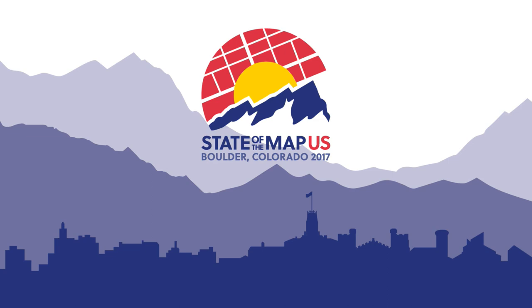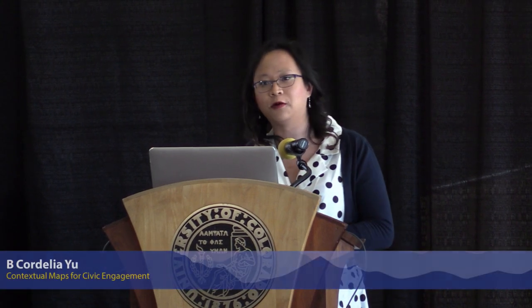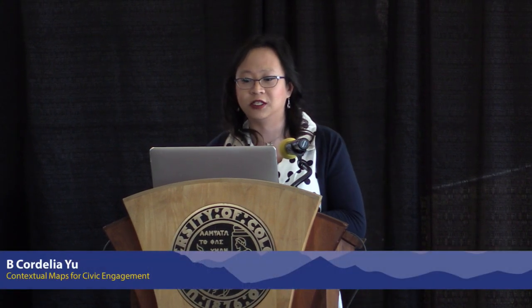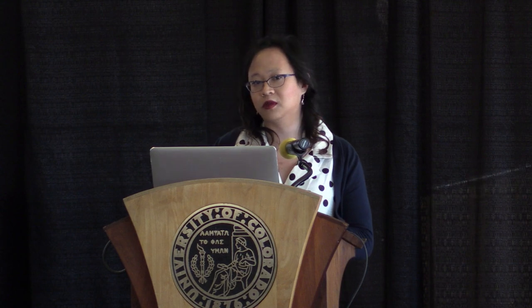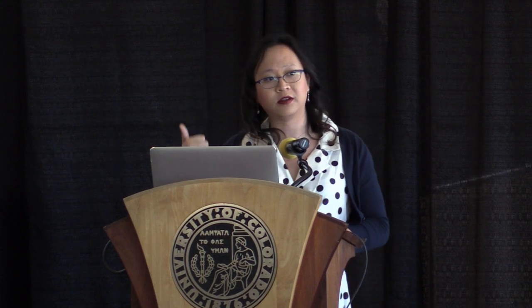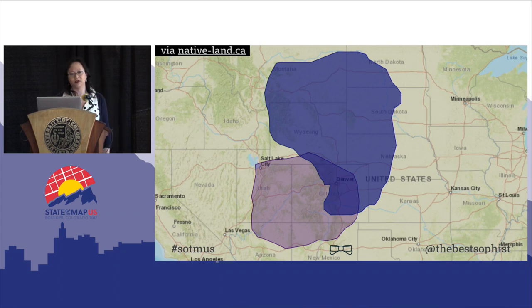I'm here to talk about the intersection of maps, citizenship, education, and democracy. But first I want to go back to Emily's keynote this morning. She started by reminding us that we are in the territorial lands of the Arapaho. She told us about how hard it is to actually find that information. We're in the area where several Native American territories overlap. Here are the territories of the Ute and the Cheyenne, and we seem to be pretty close to the center of where their territories meet.